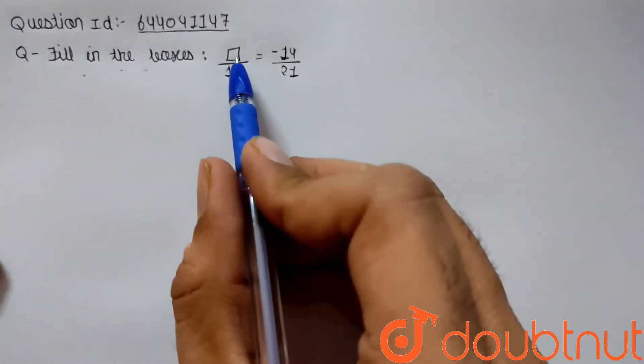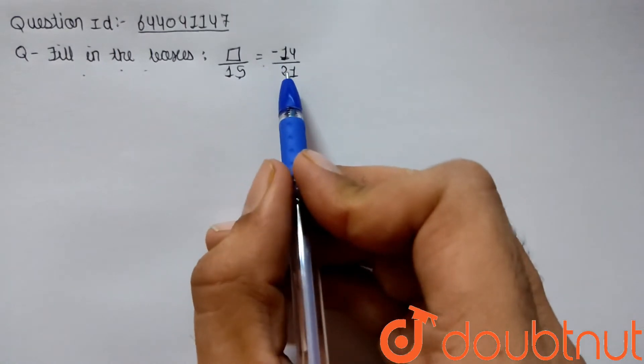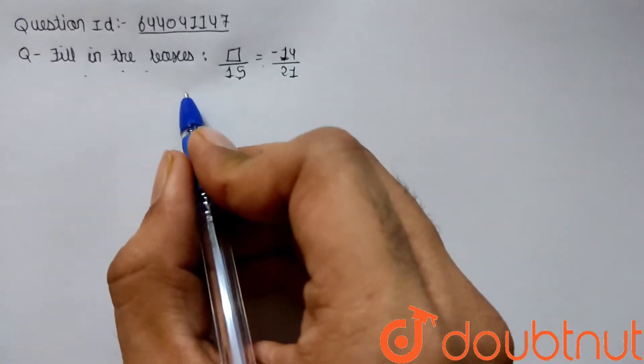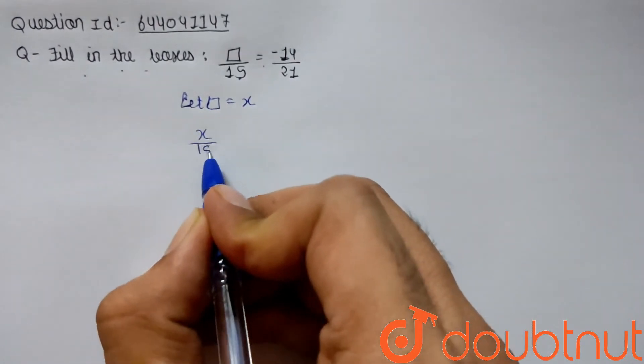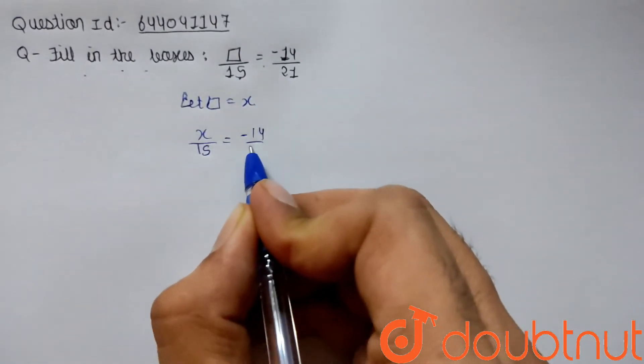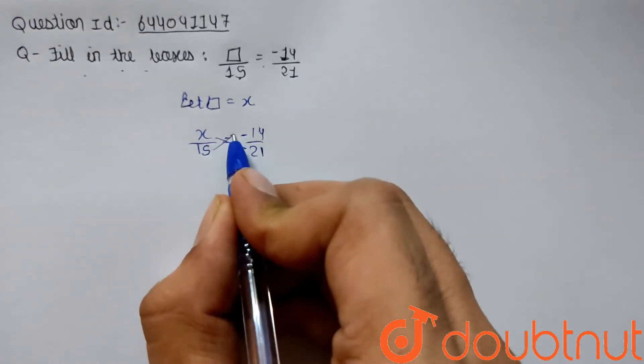Let this box equals x, so we are left with x by 15 equals minus 14 by 21. We need to find the value of x.